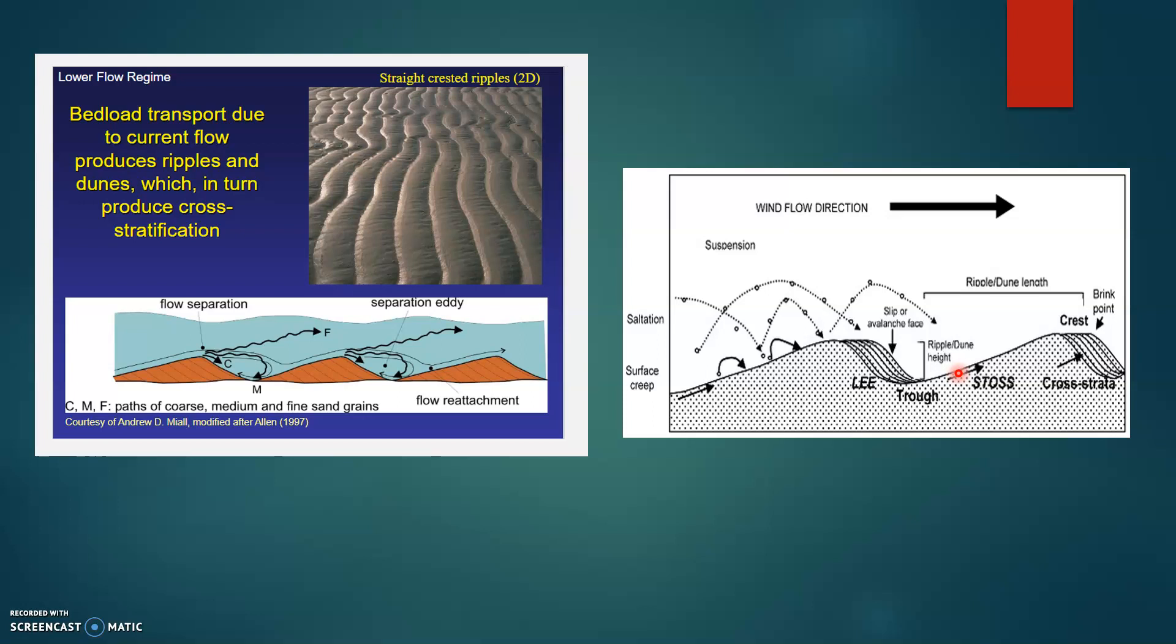Planar cross stratification is produced by straight crested bed forms and sinuous bed forms will produce trough cross stratification.